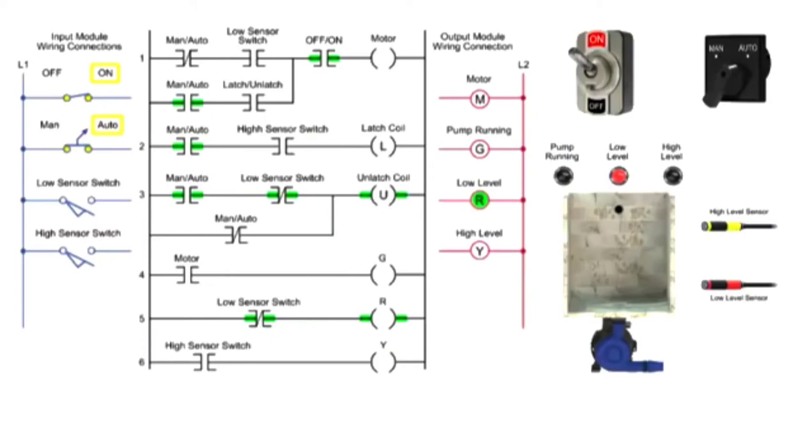As the water level rises, the low-sensor switch turns on, the red indicator lamp turns off, indicating the level is no longer low, and the internal bit is unlatched.